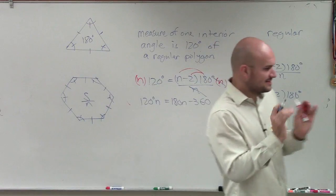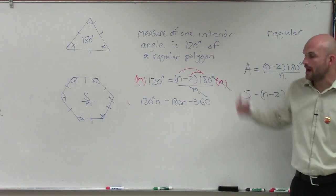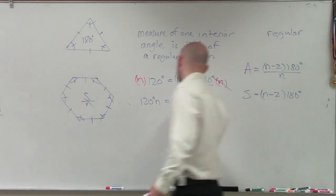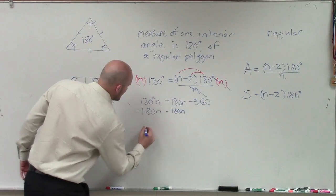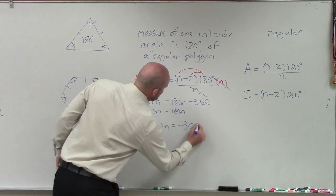All right, so the n's, what we like to say, sometimes cancel or divide it out to 1. Then I apply distributive property. Now I have an n on both sides, so I need to get the n's on the same side. So I subtract 180 on both sides. And I get negative 60n equals negative 360.